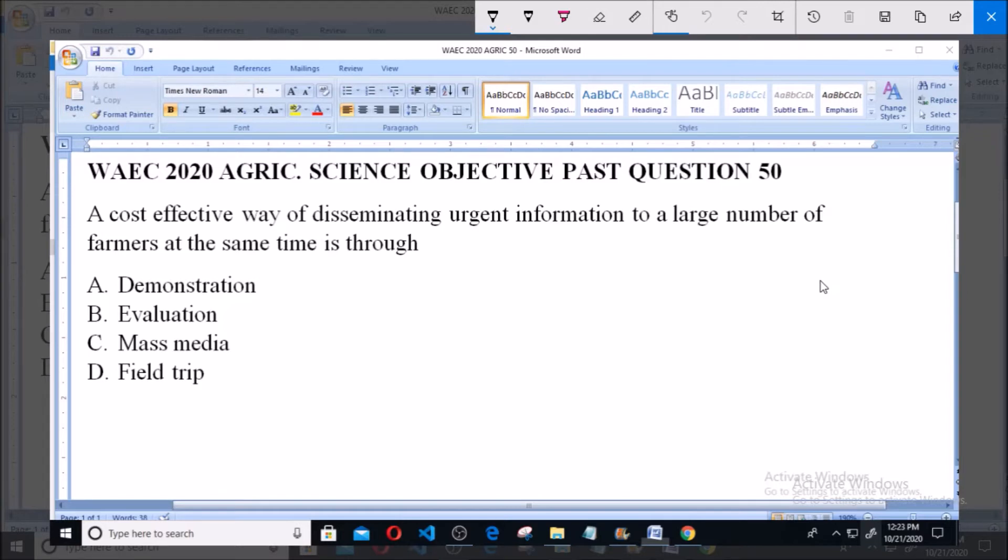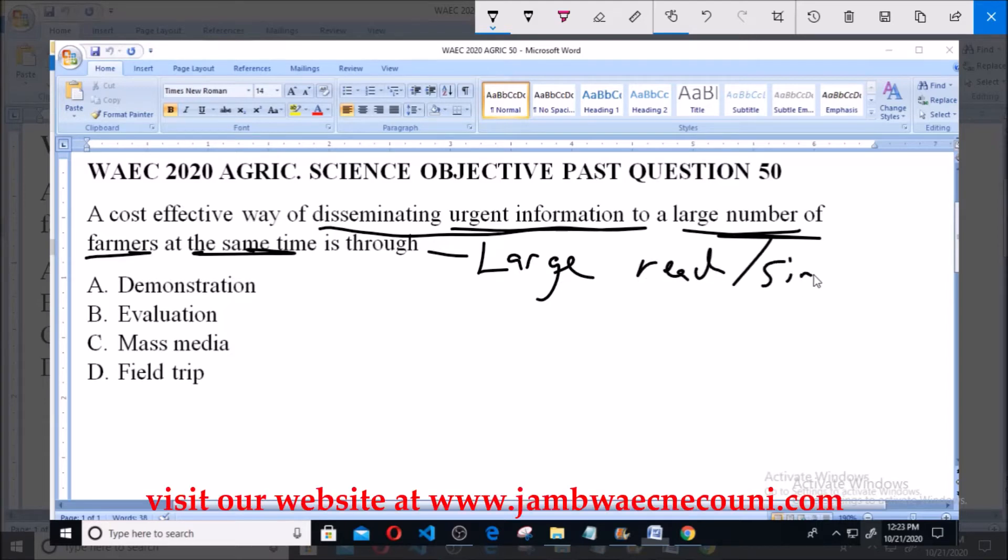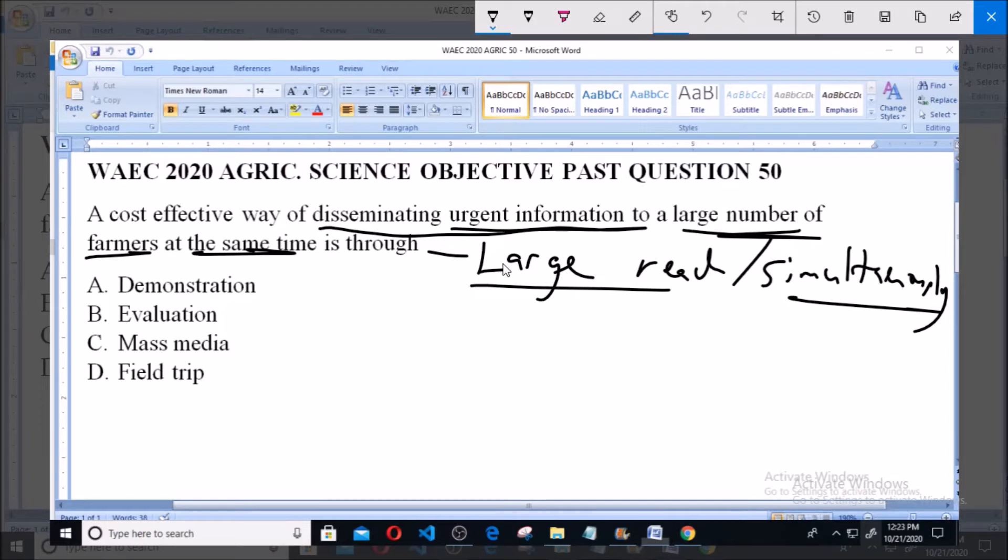So we are talking about a means of communication or disseminating urgent information to a large number of farmers at the same time. We are looking for a means that has large reach and simultaneously works to deliver the information to a large number of people at the same time.